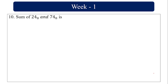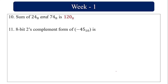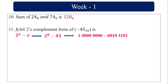The sum of 24 base 8 and 874 base 8 is 1120 base 8 — this is octal addition. For the 8-bit 2's complement form of −45 base 10: the formula is 2ⁿ − X. With n = 8, that is 2⁸ − 45 = 256 − 45. 256 in binary is 100000000 and 45 in binary is 00101101. Performing binary subtraction gives the result 11010011.